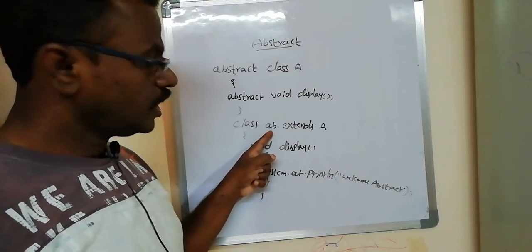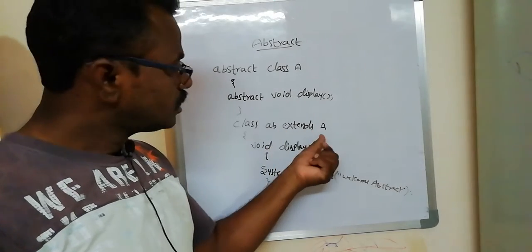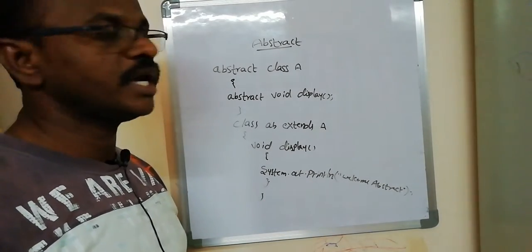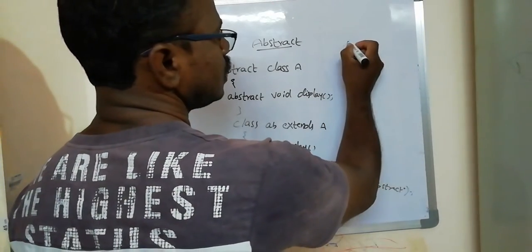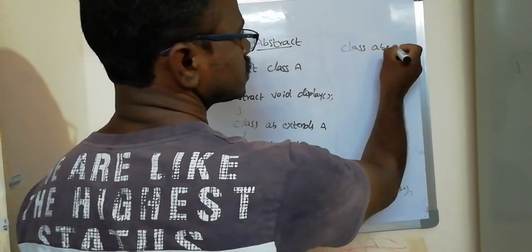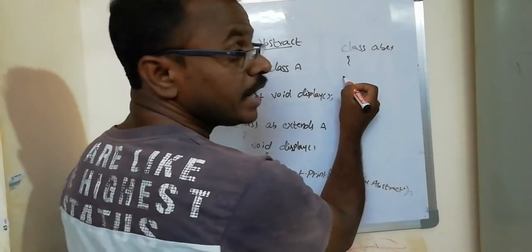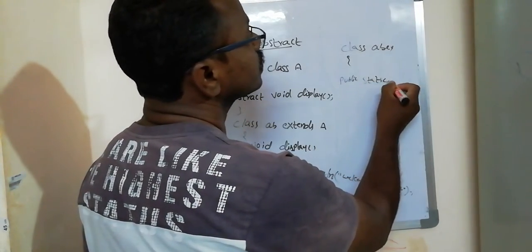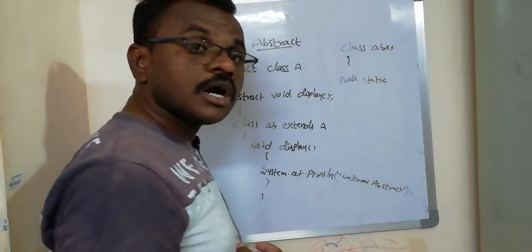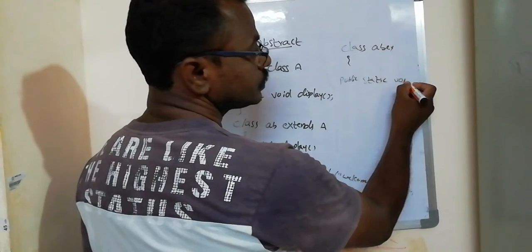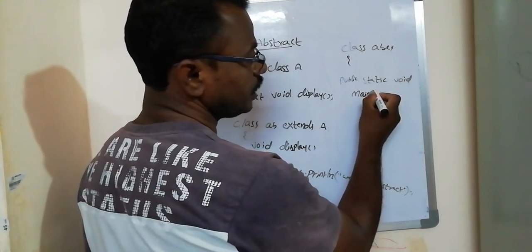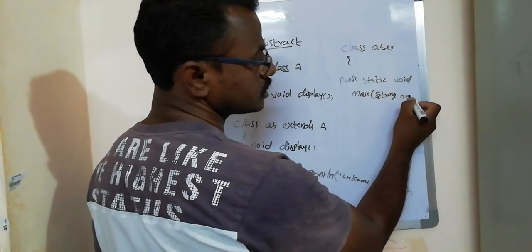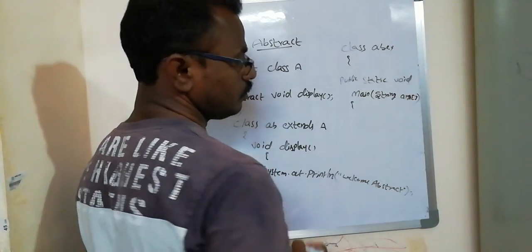Another class — class name AB — using the keyword 'extends', write the abstract class name A. The 'void display' method writes the statement 'System.out.println'. Now we write the main class. The main class is named 'AbstractExample'. We write the command-line arguments: 'public' is the access specifier, 'static' is used to display the class result without an object, 'void' is the non-return keyword, and 'main' is the method. The parameter is 'String args[]', and we open the braces.